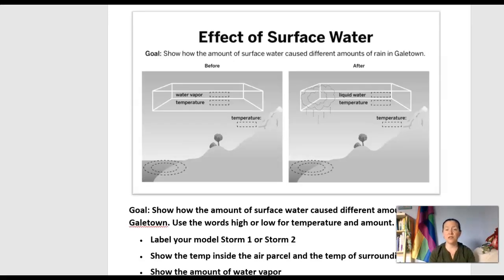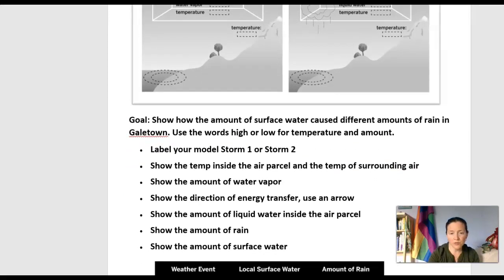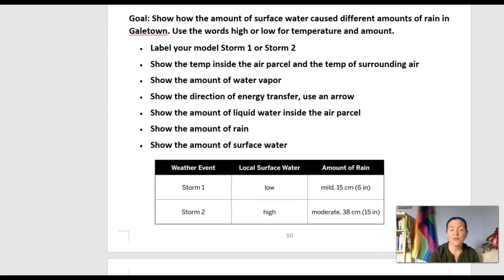Our next activity is to look at these images and write on this diagram what's going on that's causing the different rainfall. My goal is to show the amount of surface water and how it caused different amounts of rain — there's a before and an after. Down in the packet there's a table: storm one has low surface water and a mild amount of rain; storm two has a high amount of surface water and a moderate amount of rain. So I get to pick which storm I'm going to diagram and follow these steps.